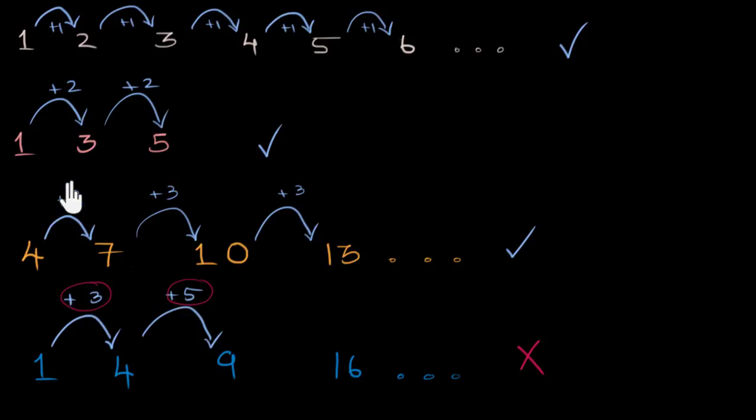So the jump size need not be one or two. It just has to be a constant. But the moment it changes across, then we know this is not an AP.